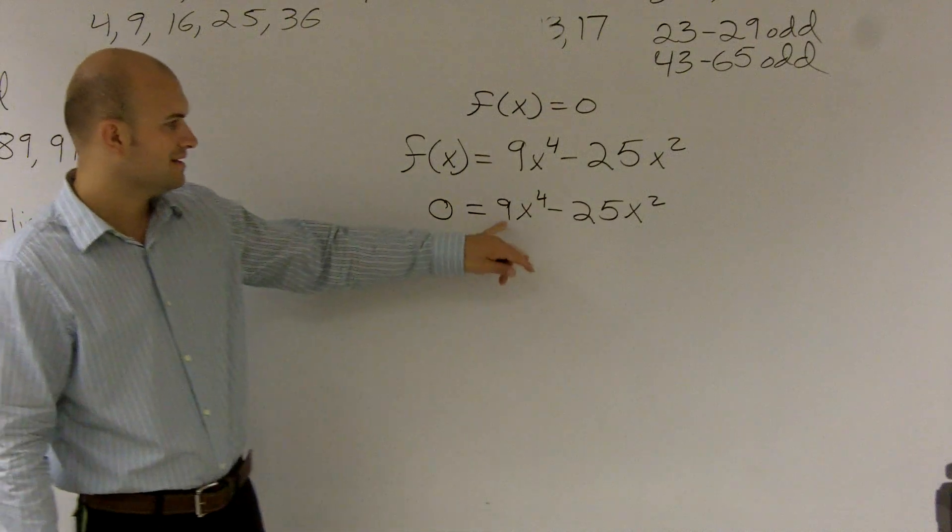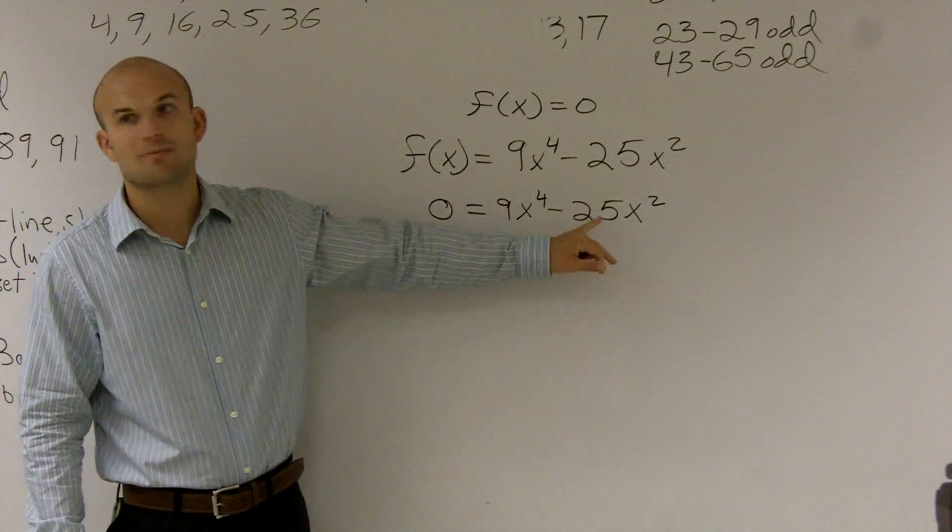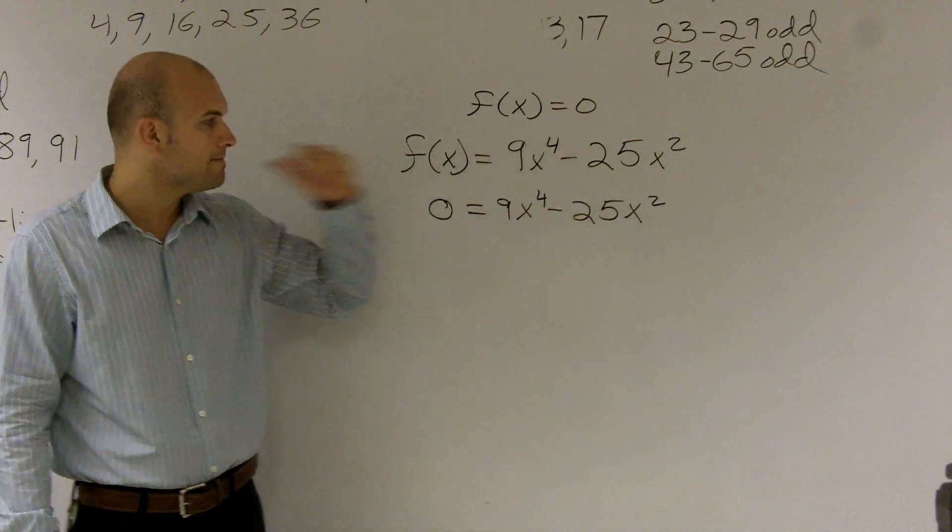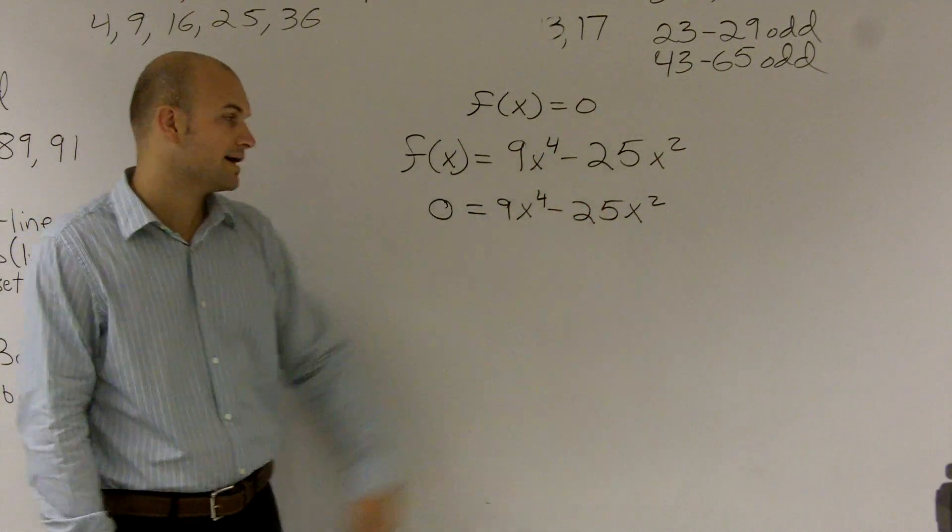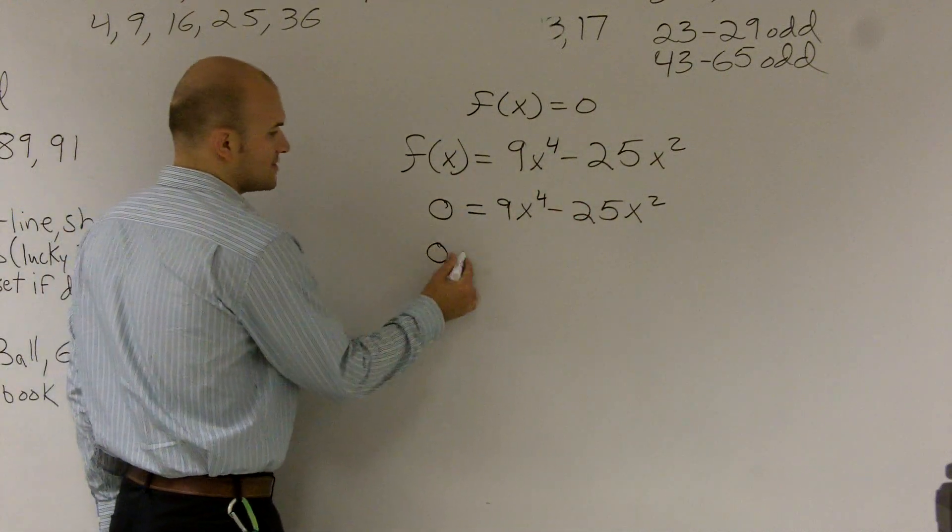And as looking at this, 9 and 25, they don't have any numbers in common. But what I do look at is I say, well, I can factor out an x squared out of both of those. So if I factor out an x squared, you can do x squared times 9x squared minus 25.